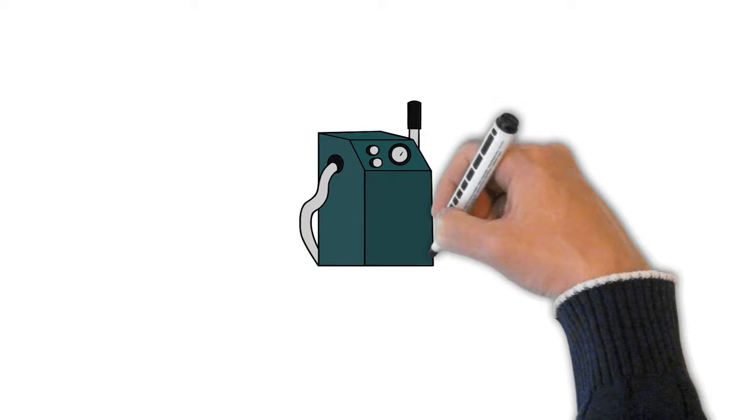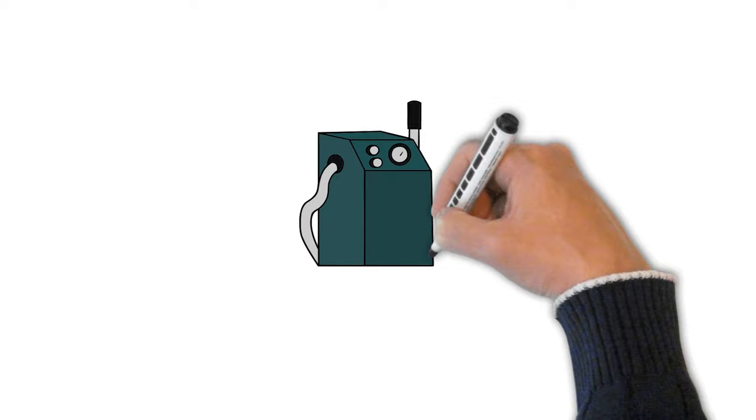It's important to note that these are general tendencies and not definitive behaviors for all type 6 individuals. Each person is unique and may not display all these characteristics.